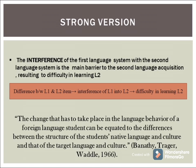This is supported by Benethey, Trager, and Weddle 1966, who state that: 'The change that has to take place in the language behavior of a foreign language student can be equated to the differences between the structure of the student's native language and culture and that of the target language and culture.' The strong version can be summarized as: the difference of the first and second language is due to the interference of the first language with the second language, resulting in difficulty in learning the second language.